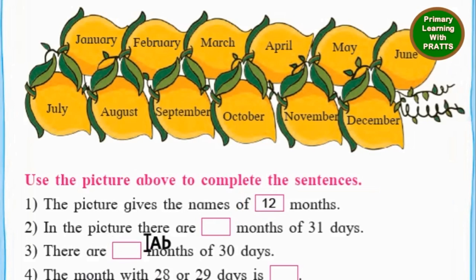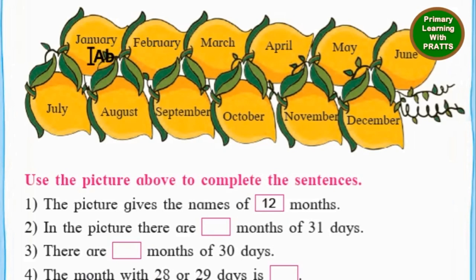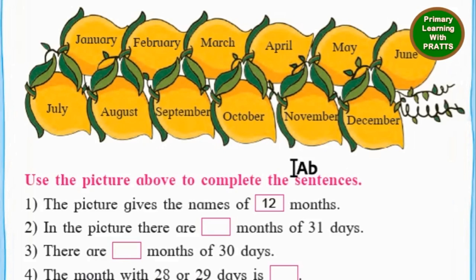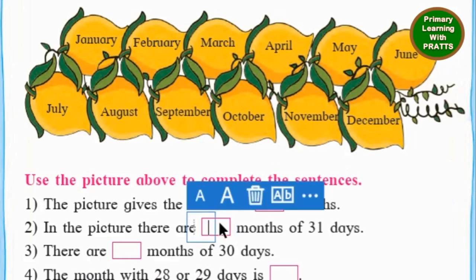Second one: in the picture there are how many months of 31 days? We have already counted on our knuckles and we should know by now. The months with 31 days are January, March, May, July, August, October, December. Counting them: 1, 2, 3, 4, 5, 6 and 7. So we have 7 months with 31 days.